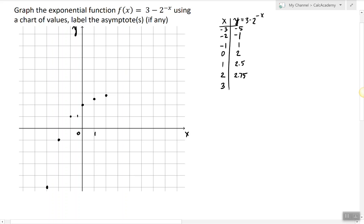So for example if I plug in 3, 2 raised to the negative 3 is 1 eighth and 3 minus 1 eighth is 2.875. So it's getting closer and closer to 3 but never reaches it.